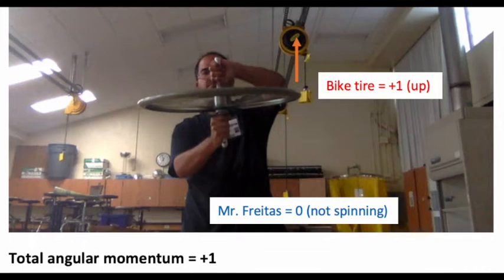I'm not spinning. I'm just on the platform. So I have no angular momentum. It's zero. Zero plus one is one. The total angular momentum of the whole system of Mr. Freitas and the bike tire is just one. The total angular momentum before is plus one.